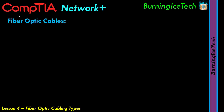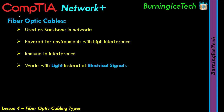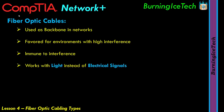These cables are often used as the backbone of networks and they're also favored in environments where there are generally very high amounts of interference. Unlike copper cables, fiber optic cables are immune to interference because they work with light, where copper cables work with electrical signals. The fact that fiber optic cables work with light instead of electrical signals means someone also won't be able to listen in on your digital traffic, so it's also more secure.